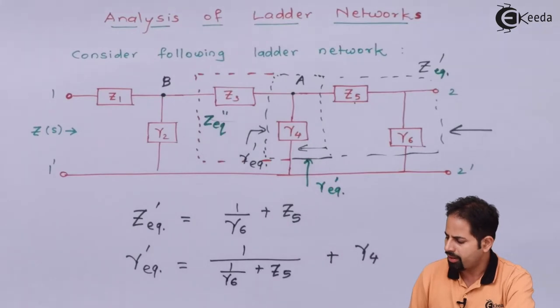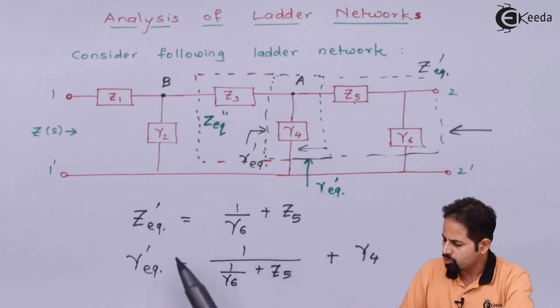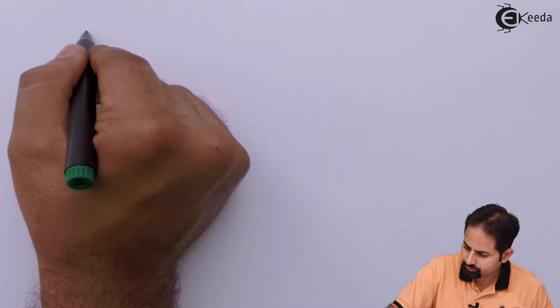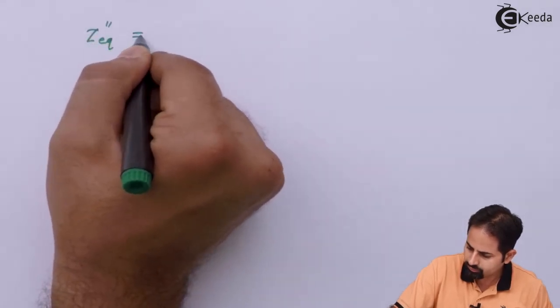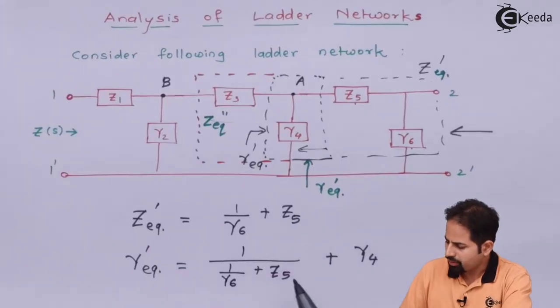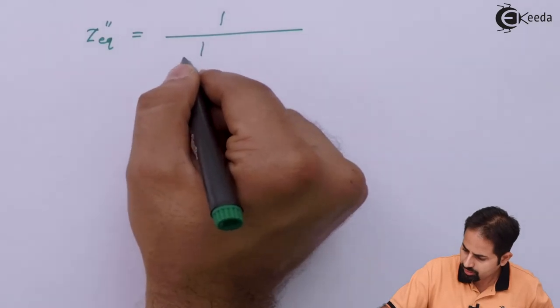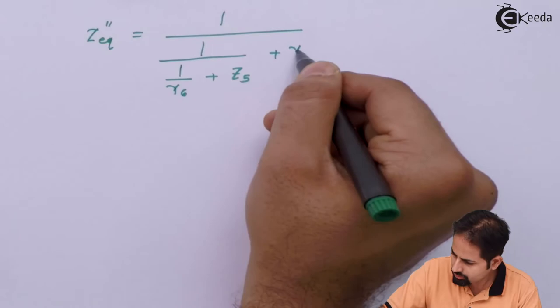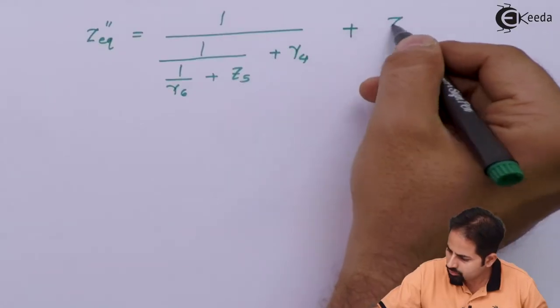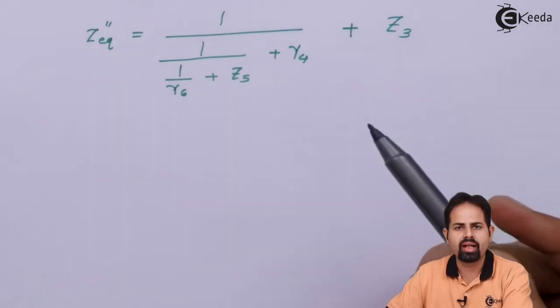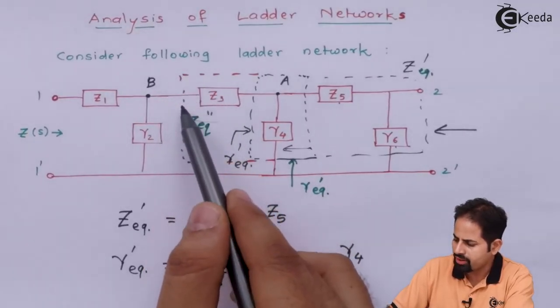So Z equivalent double dash will be reverse of this or inverse of this plus Z3. So we will take 1 upon this term and we will add with Z3. So 1 divided by this particular term. So we have got this Z equivalent double dash. That means we have covered up to point B or this region.